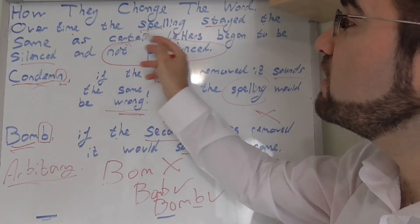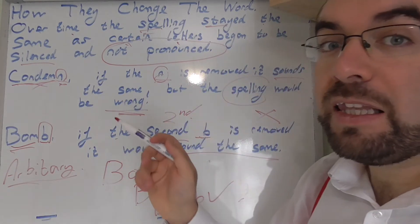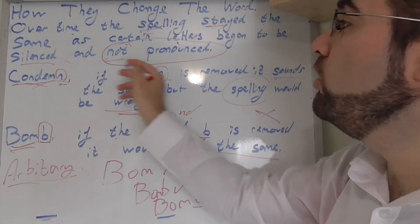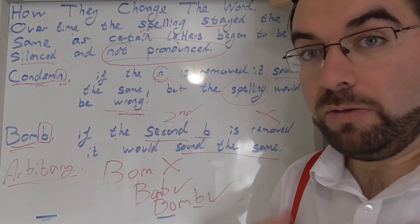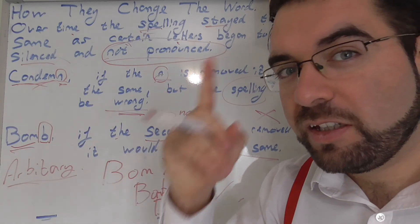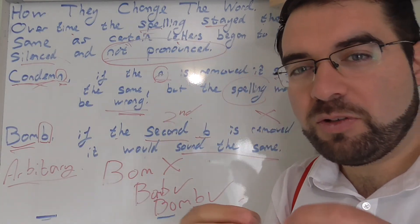So, over time, the spelling stayed the same as certain letters became silenced and not pronounced. Condemn, bomb, ballet, head, crumb, and beyond. How cool is that, language explorers? Let's keep exploring.